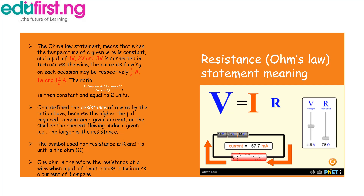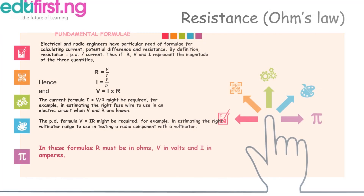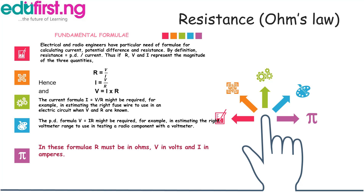The symbol used for resistance is R, and resistance is measured in ohms. The symbol for ohms is Ω, which is the Greek letter omega. One ohm is therefore the resistance of a wire when a potential difference of one volt across it maintains a current of one ampere. That is the definition of resistance, or the definition of one ohm.